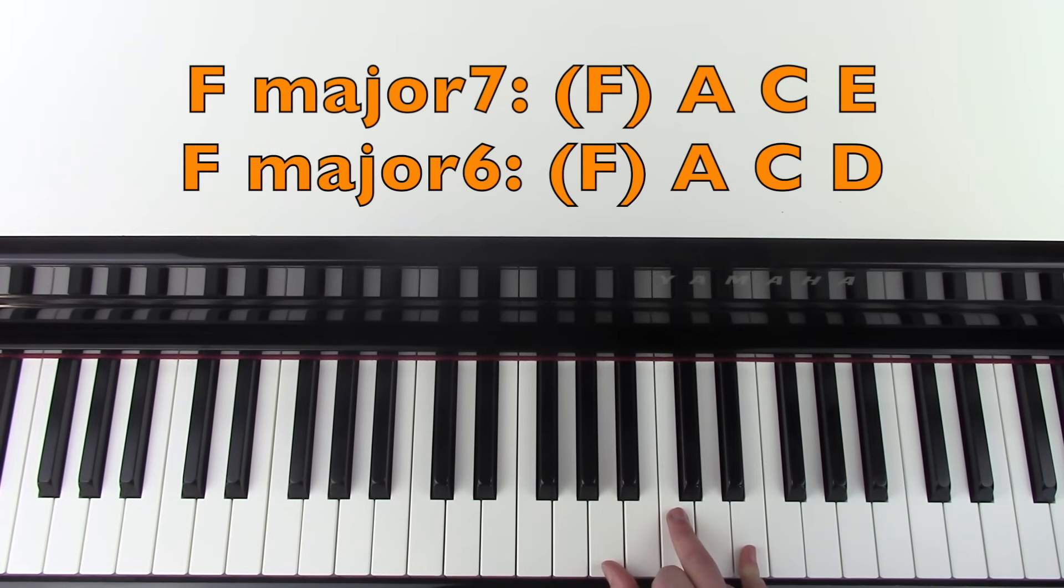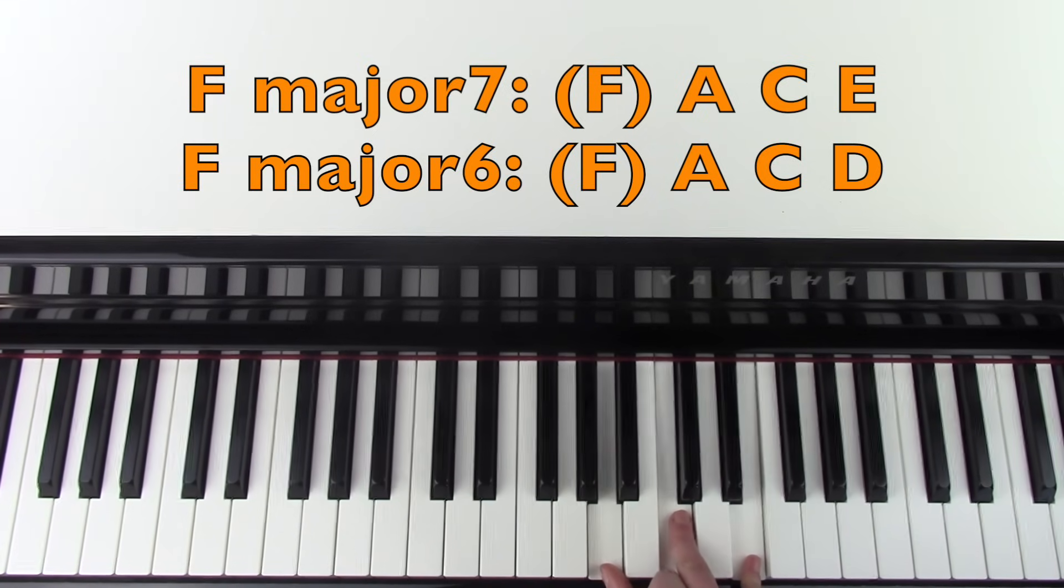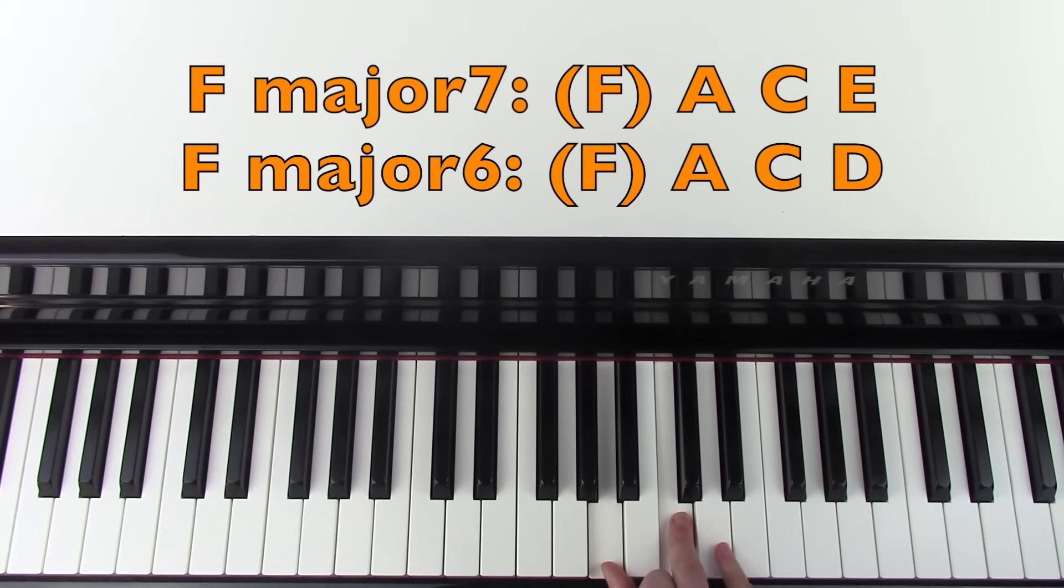The next chord is an F major 7 to an F6. In the left hand you're going to play an F, but in the right hand you're going to effectively play an A minor chord again once. Then bring the E into the D. The left hand, when we come to do that in a moment, it will sound like this.